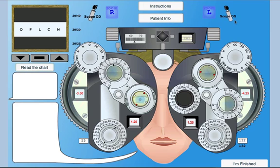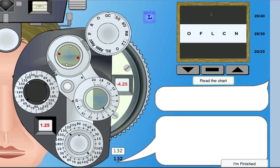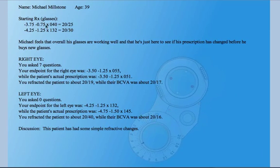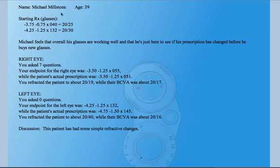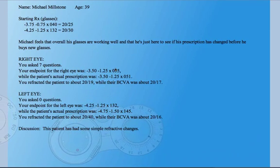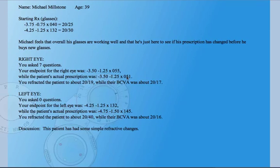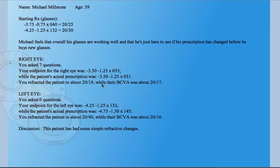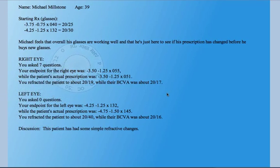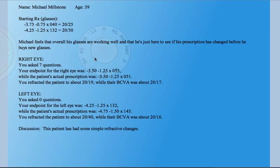When you're done with one eye, you can switch to the other one, of course — occlude that one and go from there. When you're finished, press the finish button. And it tells you how many questions you asked, what the end point was, what you found, and what quality of vision that you refracted to, and what quality of vision the patient should be able to achieve. And it just kind of gives you a sense of how you're performing.